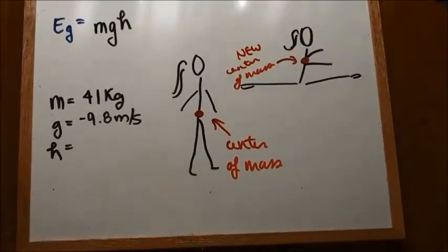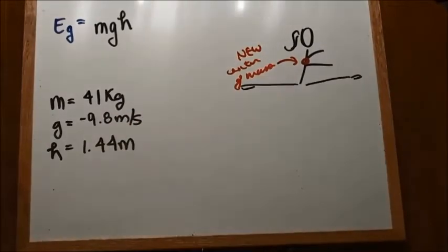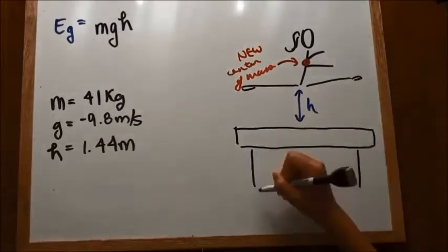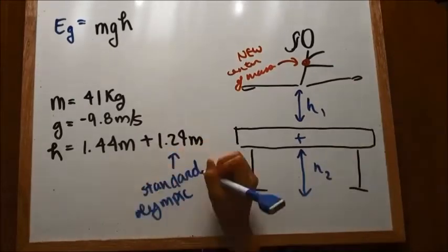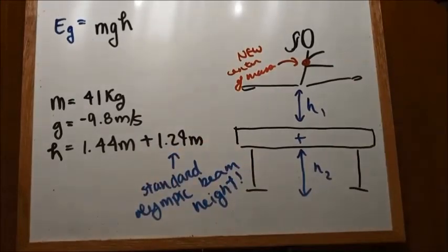This is her height. So now we have all the values to calculate the potential gravitational energy she has in that moment. However, since my tracker is calibrated so that the beam level is 0 meters, we have to add 1.24 meters to the height to take in account the height of the beam.